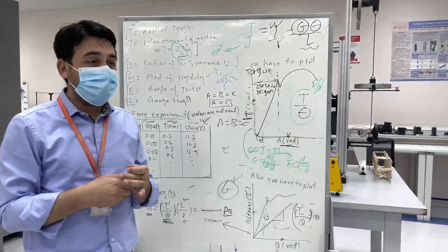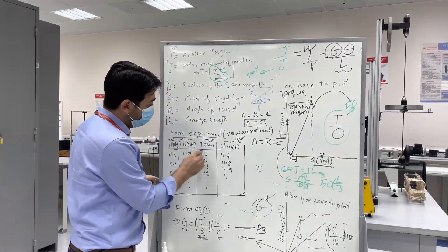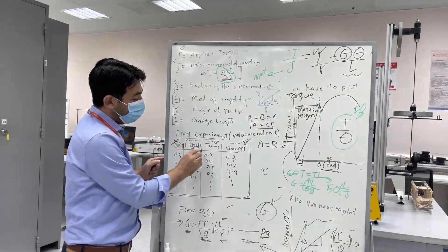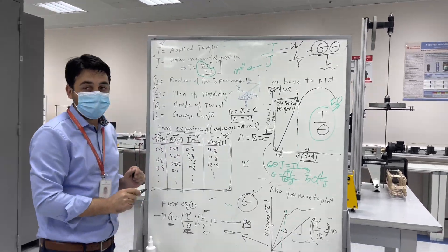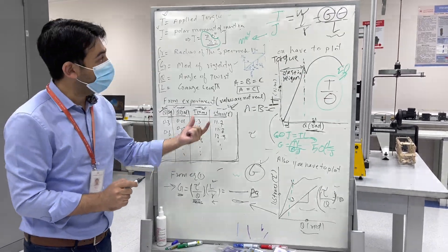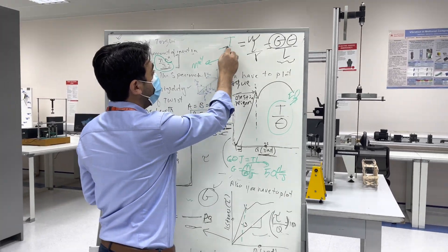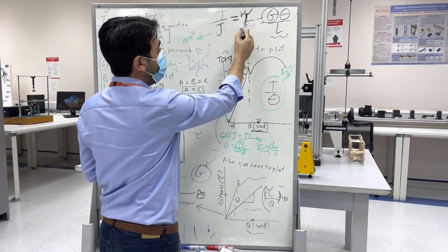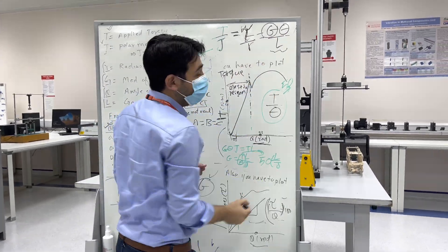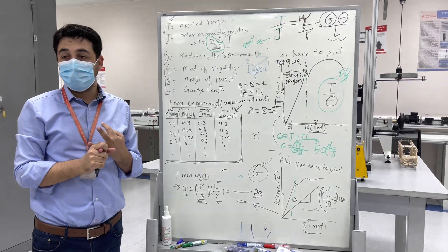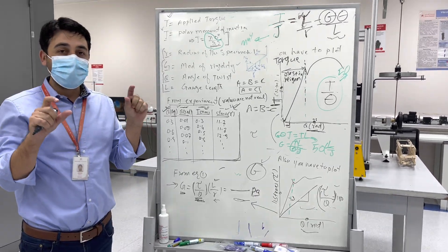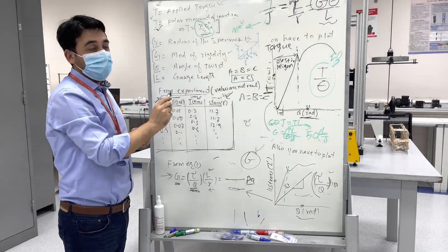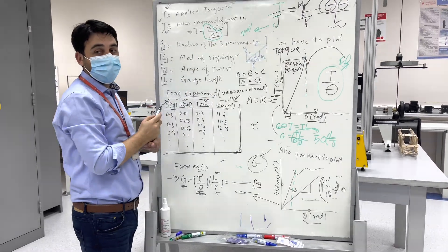On the board: you have the data table with theta in degrees, theta in radians, torque, and shear stress. Now we use the torsion formula: T/J = τ/r = Gθ/L, where T is torque, J is the polar moment of inertia, τ is shear stress, r is the radius, G is the shear modulus, θ is the angle of twist, and L is the gauge length. The polar moment of inertia for a solid shaft is J = πd⁴/32. With the diameter given, you can find J.